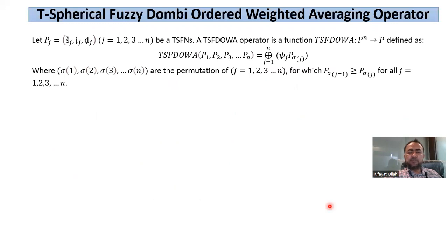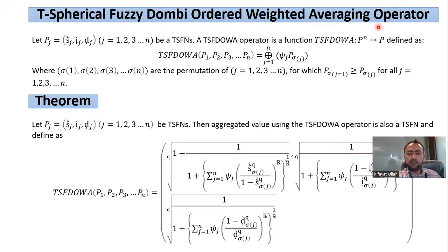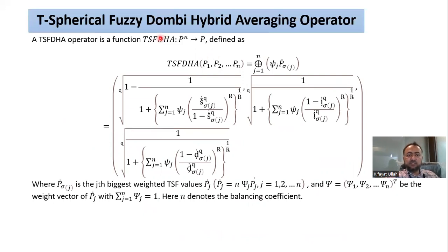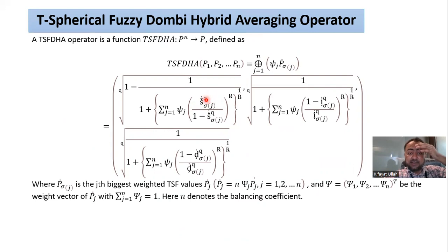We also present two special types of T-spherical fuzzy Dombi aggregation operators. The T-spherical fuzzy Dombi ordered weighted averaging operator is used when we need to highlight the ordered position of the information. The T-spherical fuzzy Dombi hybrid averaging operator is used when we need to weight both the T-spherical fuzzy argument itself and give importance to its ordered position simultaneously.